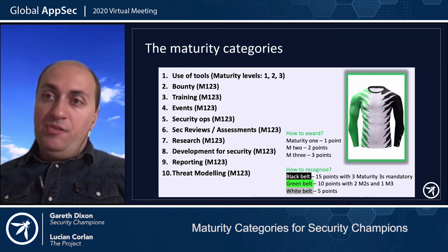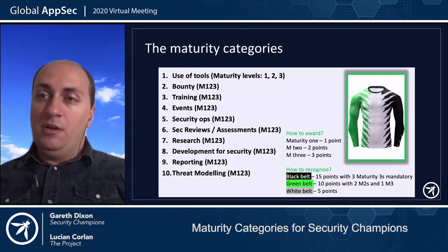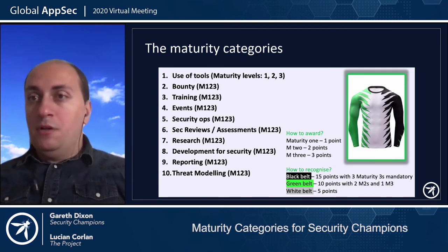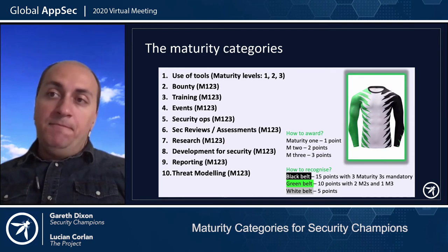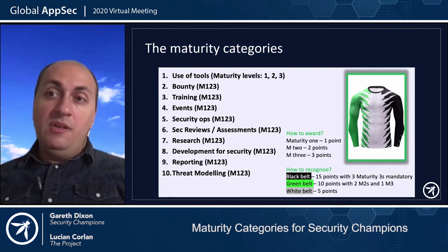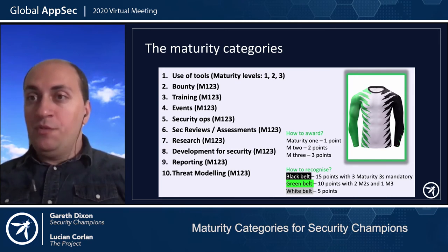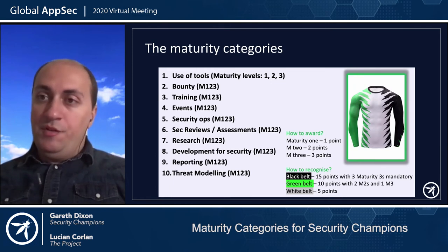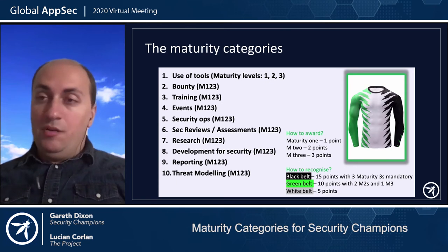Research revolves around performing research in the context of information security. Champions could be researching an alternative fix to an issue, researching for innovative issues or zero days, or elaborating design patterns specific to security — which links closely with the next category, development for security. Champions could be developing tools to be used by the security team or by themselves. There are now automated pipelines where security champions develop tools for automated security testing, for example, and this activity will be captured against this category.